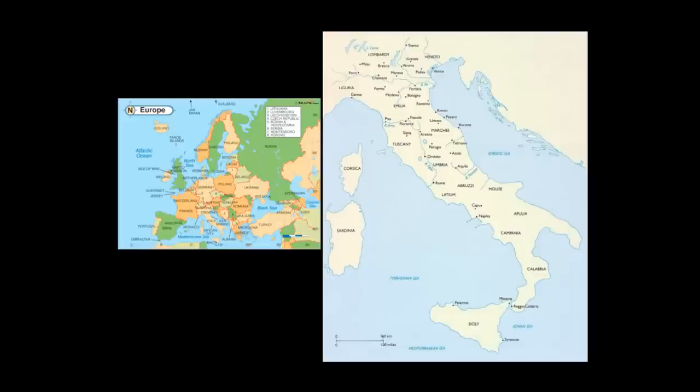Where we're going to be spending most of our time, as you might guess due to the documentary, is in Florence. You can see Florence there — if you see the word Tuscany on the west coast of Italy, a few cities above that, you'll see Florence, right along a river. One of the reasons it was a powerful city: it was in a good position for trade. Its wealth is one of the things that allows the Renaissance to really begin.